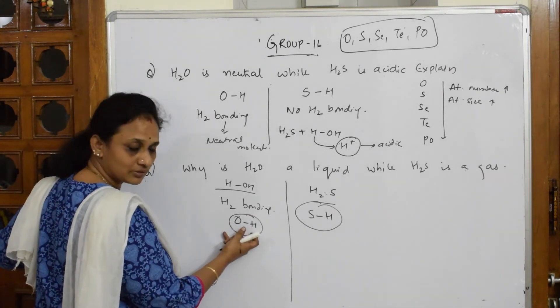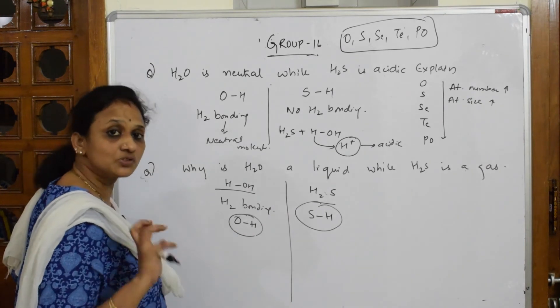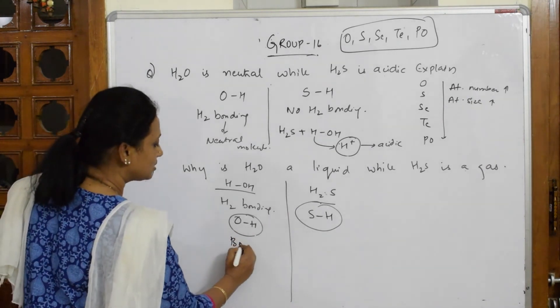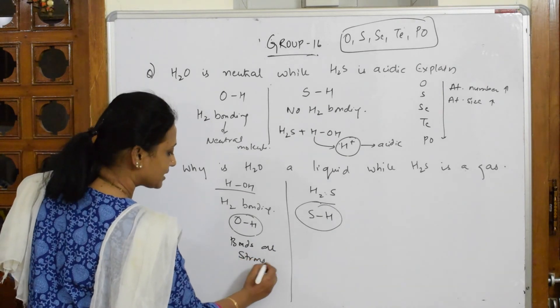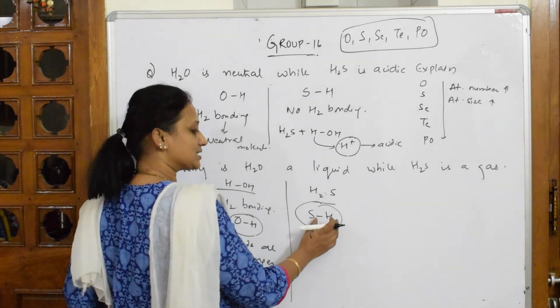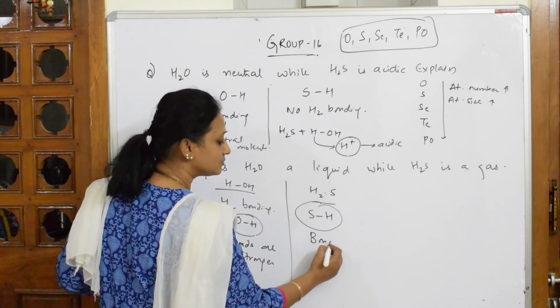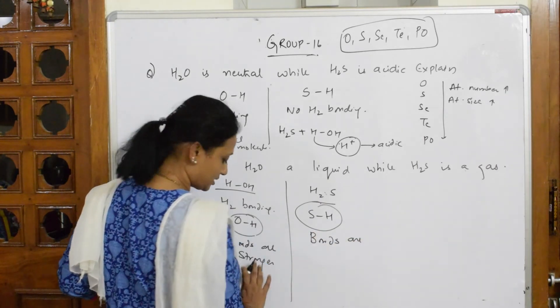Here in S and H, as I said the size increases. Now oxygen and hydrogen when I compare, the size is a bit smaller compared to this. So what will happen to the bond? The bonds are stronger. Here as the size increases in sulfur and hydrogen, the bonds are weaker compared to this.